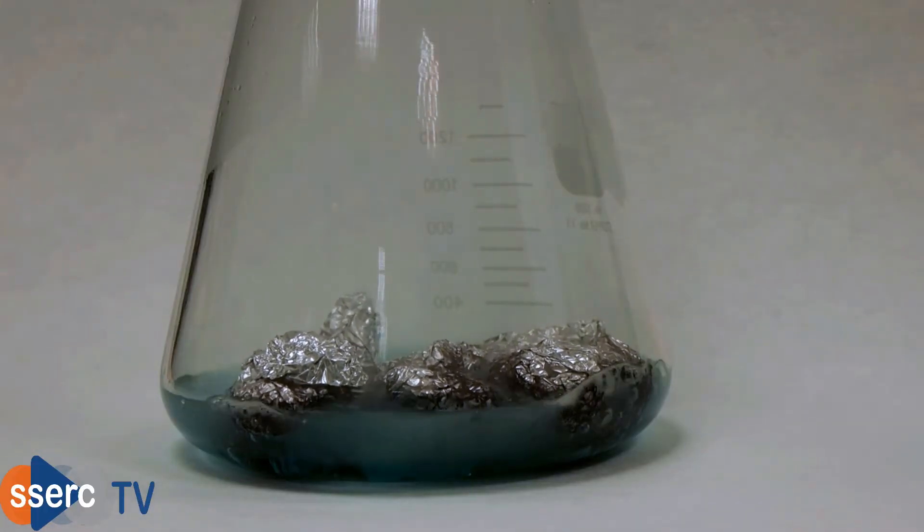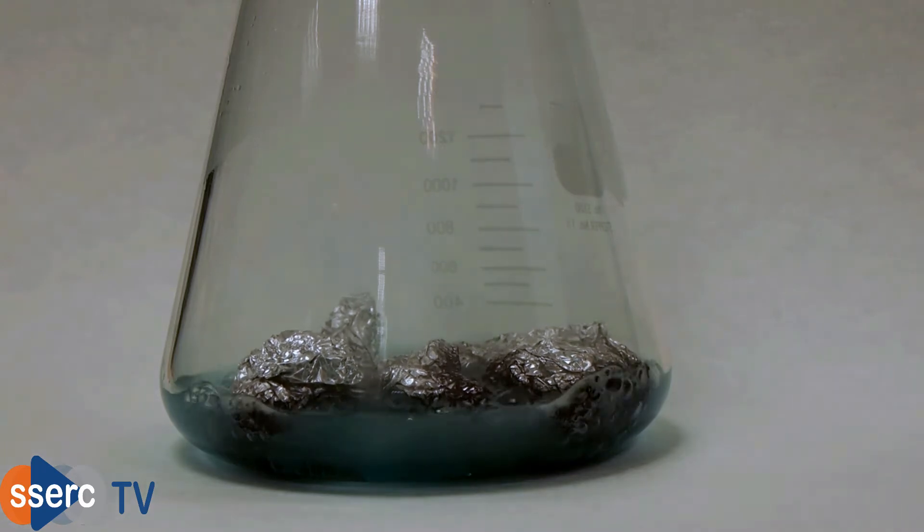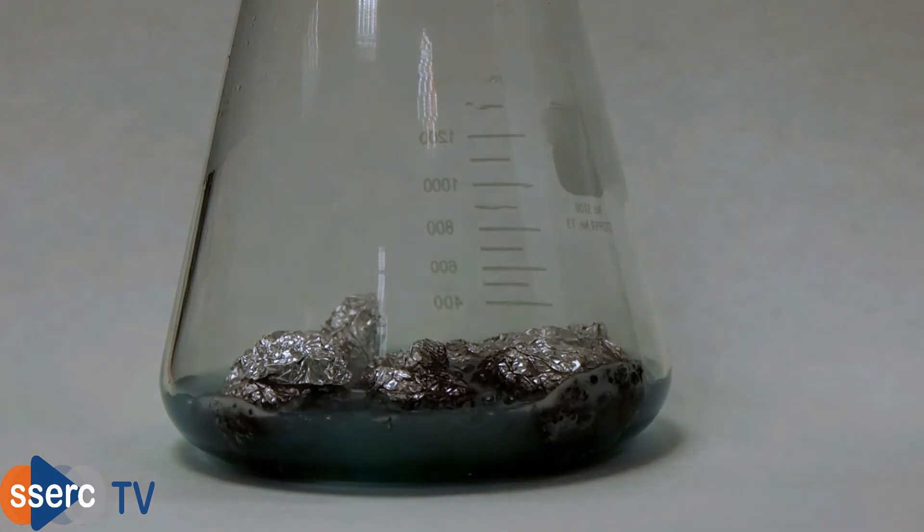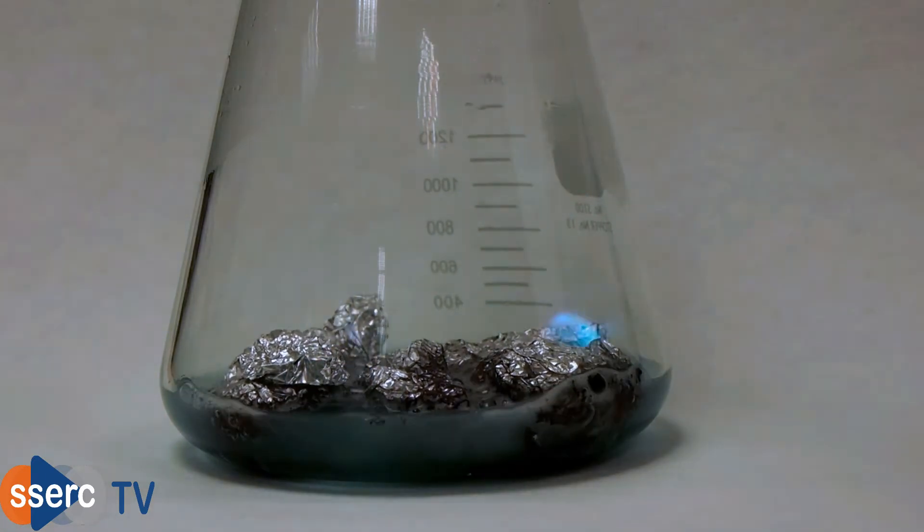We leave it for 30 seconds or so and then apply a lit splint to the top of the flask. There is a pop and you'll see a blue-green flame dancing over the bubbling metal.